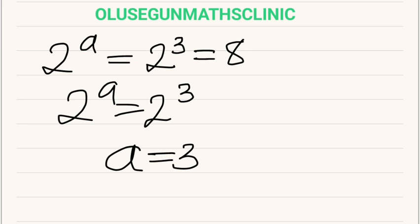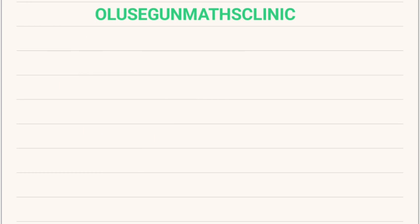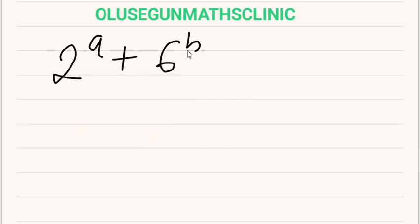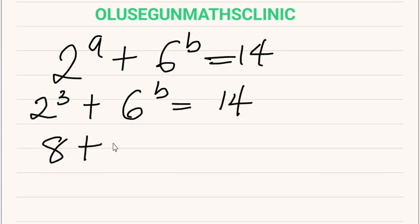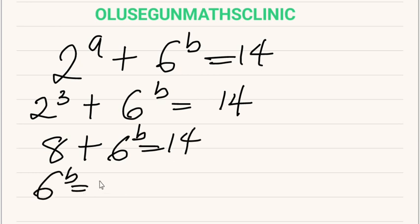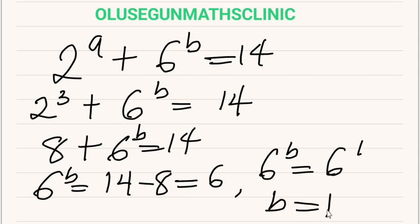Going back to one of the equations, we have 2 raised to power A plus 6 raised to power B equals 14. Substituting A equals 3: 2 raised to power 3 plus 6 raised to power B equals 14, so 6 raised to power B equals 14 minus 8, which equals 6. Therefore, 6 raised to power B equals 6 raised to power 1, meaning B is equal to 1.